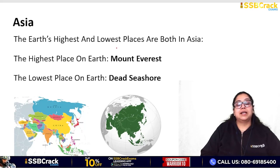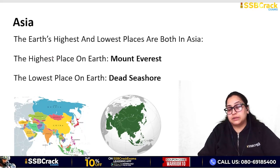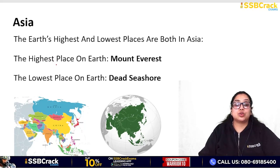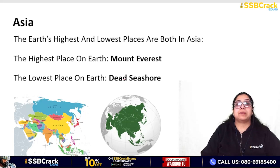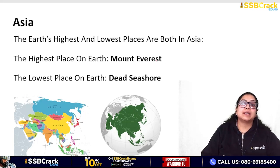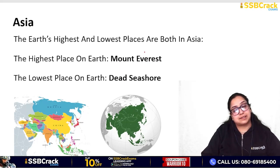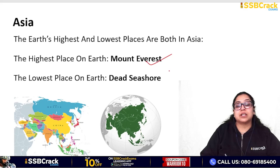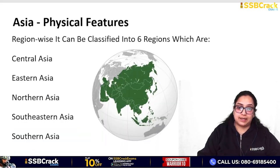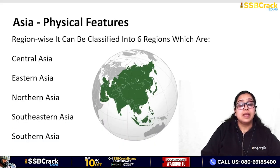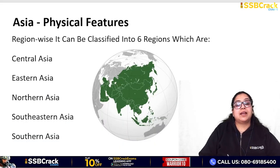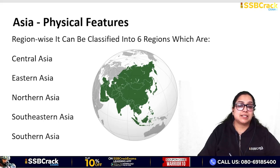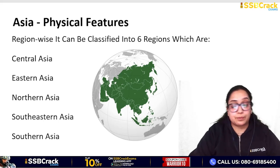Looking at all of Earth, the highest and lowest places are both found in Asia. The highest point is Mount Everest and the lowest place is the Dead Sea shore. Now let's talk about the physical features of Asia.